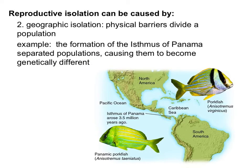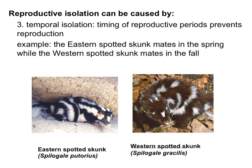The second type is geographic isolation, when physical barriers divide a population. Originally there was a single population of pork fish, but the formation of the Isthmus of Panama separated these populations, and over time they became genetically different, creating the Panamic pork fish and the regular pork fish. The third type is temporal isolation, which has to do with the timing of reproductive periods. For example, the eastern spotted skunk mates in the spring while the western spotted skunk mates in the fall, separating these populations over time.